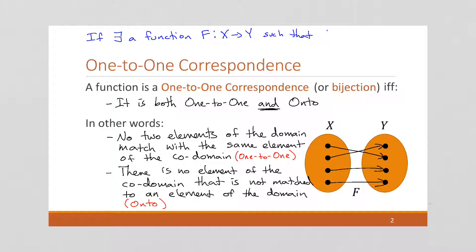Now, if there exists a function such that f is a one-to-one correspondence, then the size of X must equal the size of Y. So this follows from the function being both one-to-one and onto.